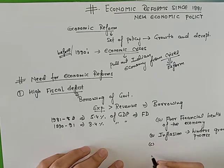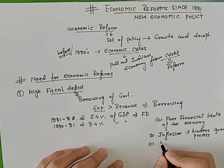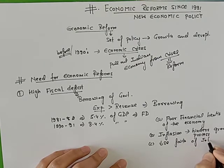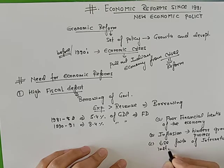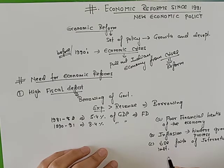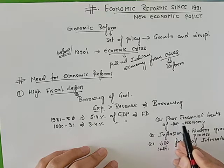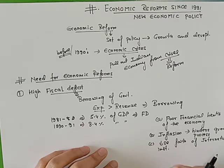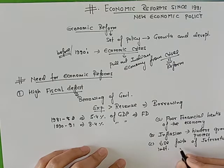Third consequence: it decreases the faith of international institutions. What happened is that if your government borrows too much from foreign countries, your credit rating declines. Credit rating ka matlab hai ki is government ki financial health bahut kharab condition mein hai, jiski vajah se jo bahar ke investors hain, aapki country mein invest karna band kar denge. So that is why it decreased the faith of international institutions such as the World Bank.